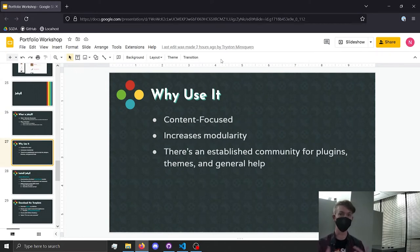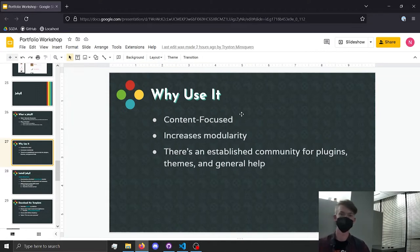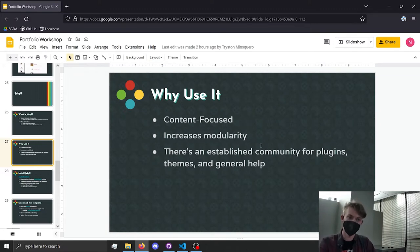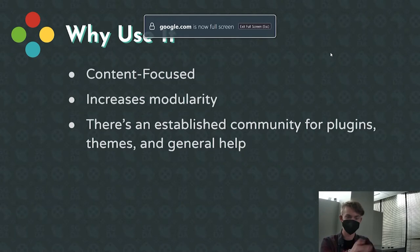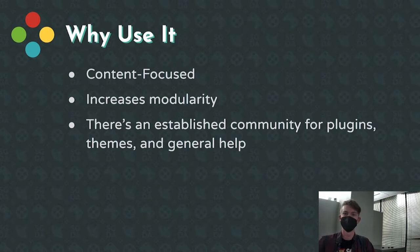Jekyll is very much blog-oriented, so it has a whole system set up for creating posts, showing those posts, and separating stuff by categories and tags — which fits the portfolio purpose very well. The reasons I really like Jekyll: it's very content-focused, so you can find a theme and if it's set up well, you can create a ton of really cool content with very little knowledge of HTML, CSS, or JavaScript. It also increases modularity — you can put stuff into components or separate out stylesheets, making it easier to maintain. There's also an established community, so if you want plug-ins, themes, or help, there are tons of people on the internet and at Stack Overflow.